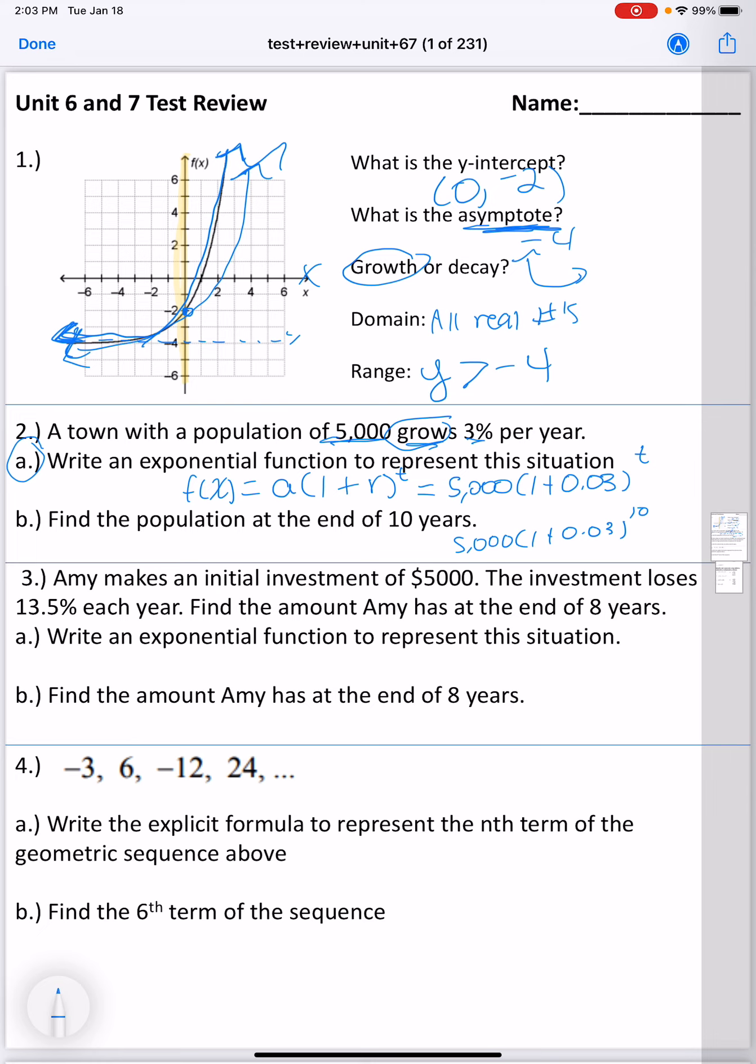So now, in your calculator, you would do 1 plus 0.03, raise it to the 10th power, and then multiply by 5,000. If you do that correctly, you should get about 6,719 as the approximate population after 10 years.